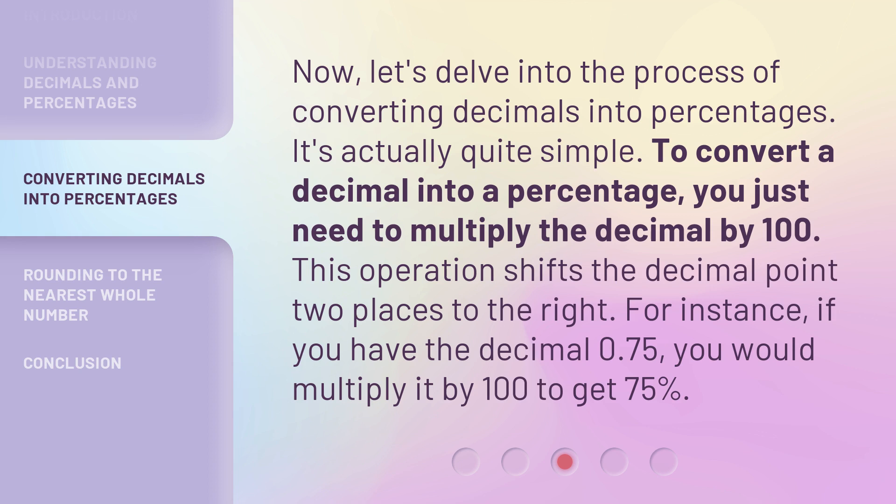For instance, if you have the decimal 0.75, you would multiply it by 100 to get 75%.